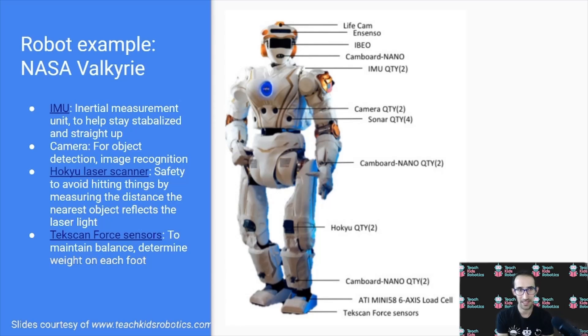Let's look at a specific example. The NASA Valkyrie robot is a humanoid style robot that can walk around. But how is it capable of walking around without hitting anything? It uses a multitude of sensors to achieve this. First, it uses an inertial measurement unit, or IMU, to help stay stabilized so it knows when it's falling down, similar to the liquid inside of our ears. It uses a camera for object detection and to determine if the path in front of it is open. It uses a laser scanner to determine the distance from objects around it. And it uses force sensors in its feet to determine whether or not both feet are on the ground.